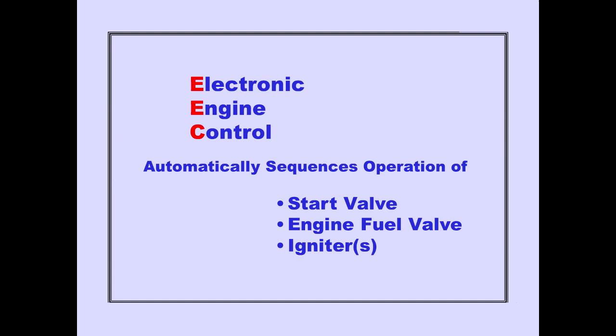The electronic engine control automatically sequences the operation of the start valve, the engine fuel valve, and the selected igniter. The EEC follows start progress by monitoring EGT and N2 RPM until the engine stabilizes at idle.